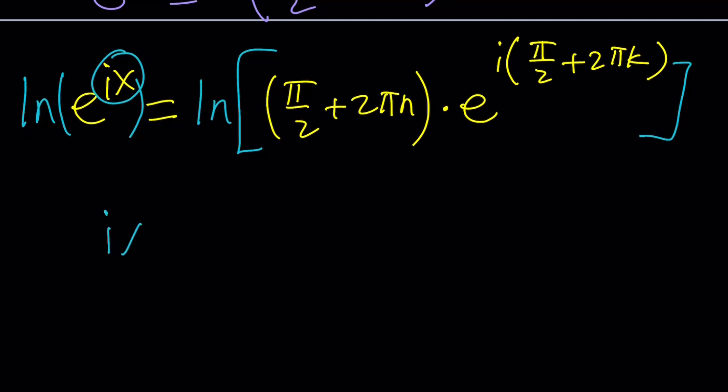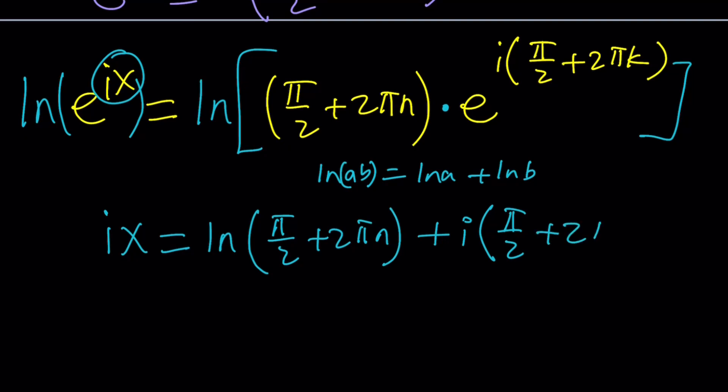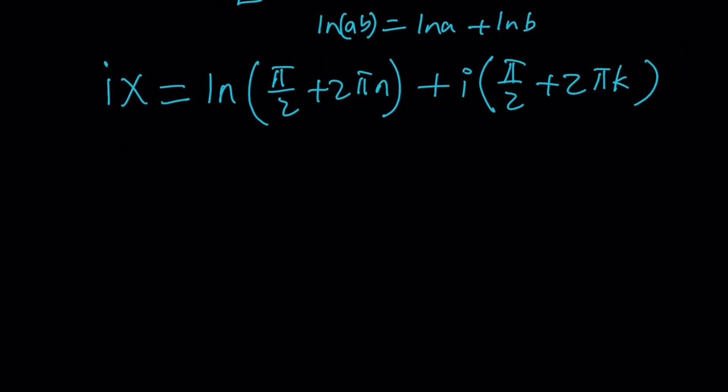This is just going to be ix from properties of logarithms, and now this is a product. How do you ln or natural log a product? Well, if you think about it, ln a times b can be written as ln a plus ln b, another property of logarithms. So we can write this as ln of π over 2 plus 2πn plus ln e to the power of that, but it's just going to be that thing. So i times π over 2 plus 2πk.